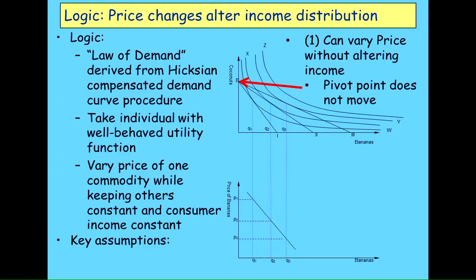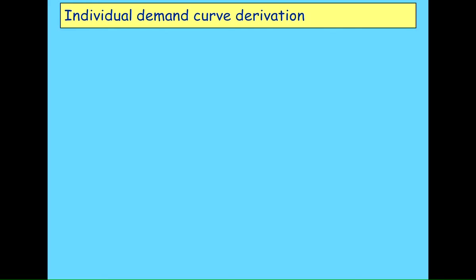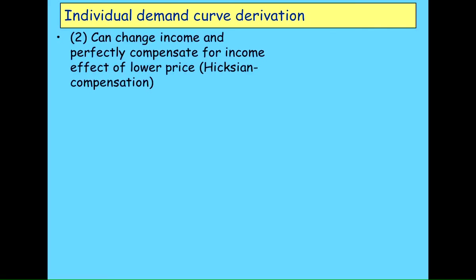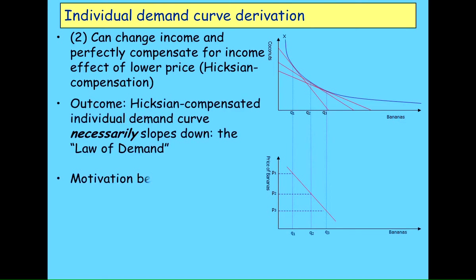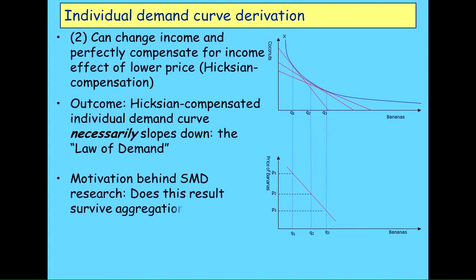The second stage is: having done that, you know you've got an income effect as well as a substitution effect. So you can eliminate the substitution effect by moving back to the indifference curve you started from, and then you derive a downward-sloping Hicksian compensated demand curve. Now, the SMD conditions were saying: we know this applies to an individual — does it survive aggregation? And the answer was no.